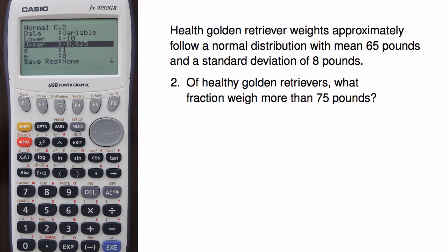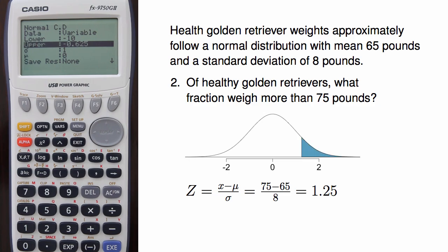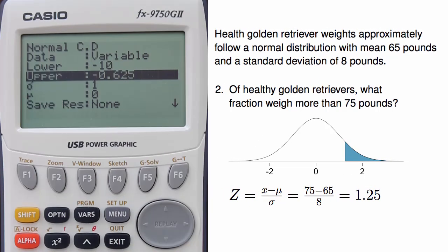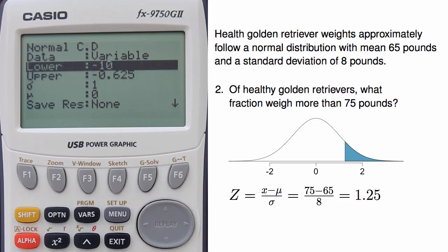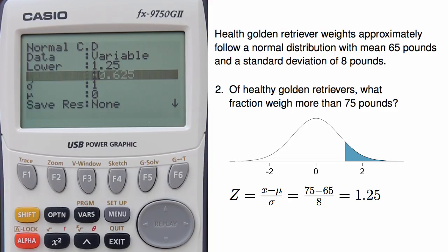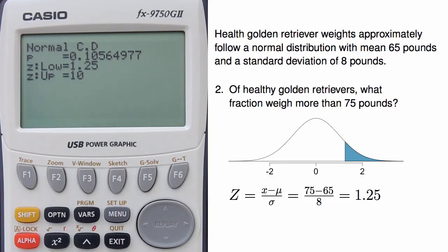On to the second problem. Of healthy golden retrievers, what fraction weigh more than 75 pounds? I'm looking for the upper tail and I again compute a z-score for the cutoff, which in this case is 75 minus 65 divided by 8, which is z equals 1.25. I should also be sure to draw a picture for this situation. To find the area using a Casio calculator, I can punch in lower and upper bounds for the standard normal distribution. The lower bound is now 1.25, and I can use 10 for the upper bound. This gives me an answer of 0.1056.